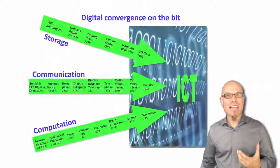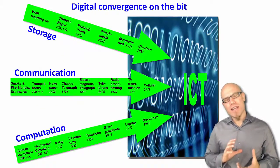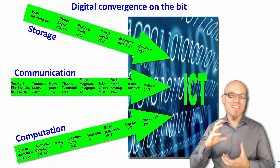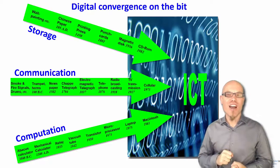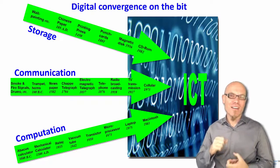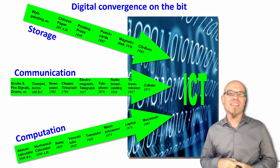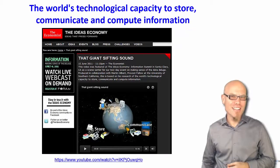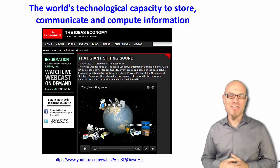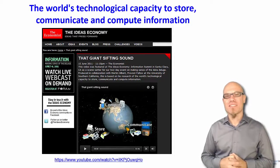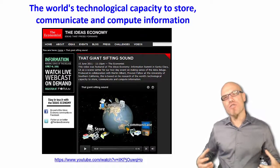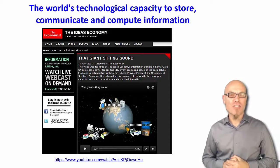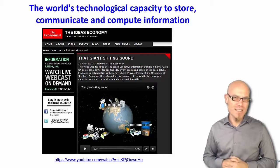The basic idea is that previously separated technologies converge together on what we call information and communication technology, and these three are computation, communication, and storage. Let's have a look at this little video that I produced together with the magazine The Economist and with USC about the growth of storage, communication, and computation over the recent decades.